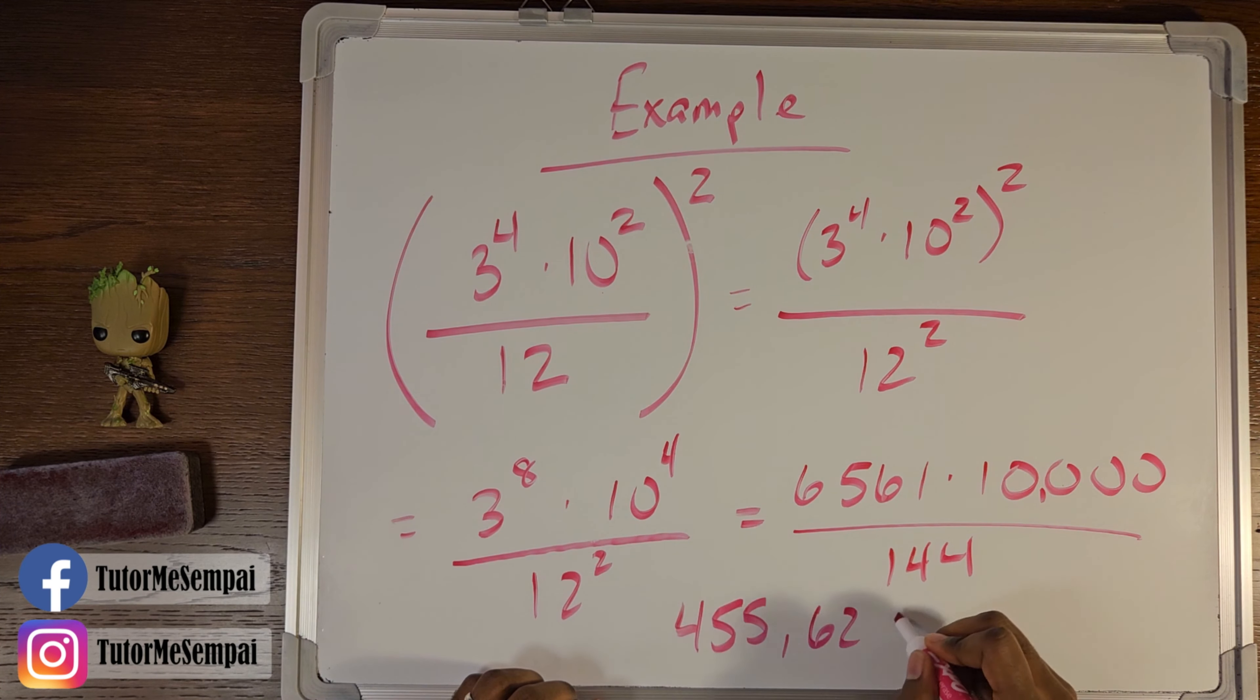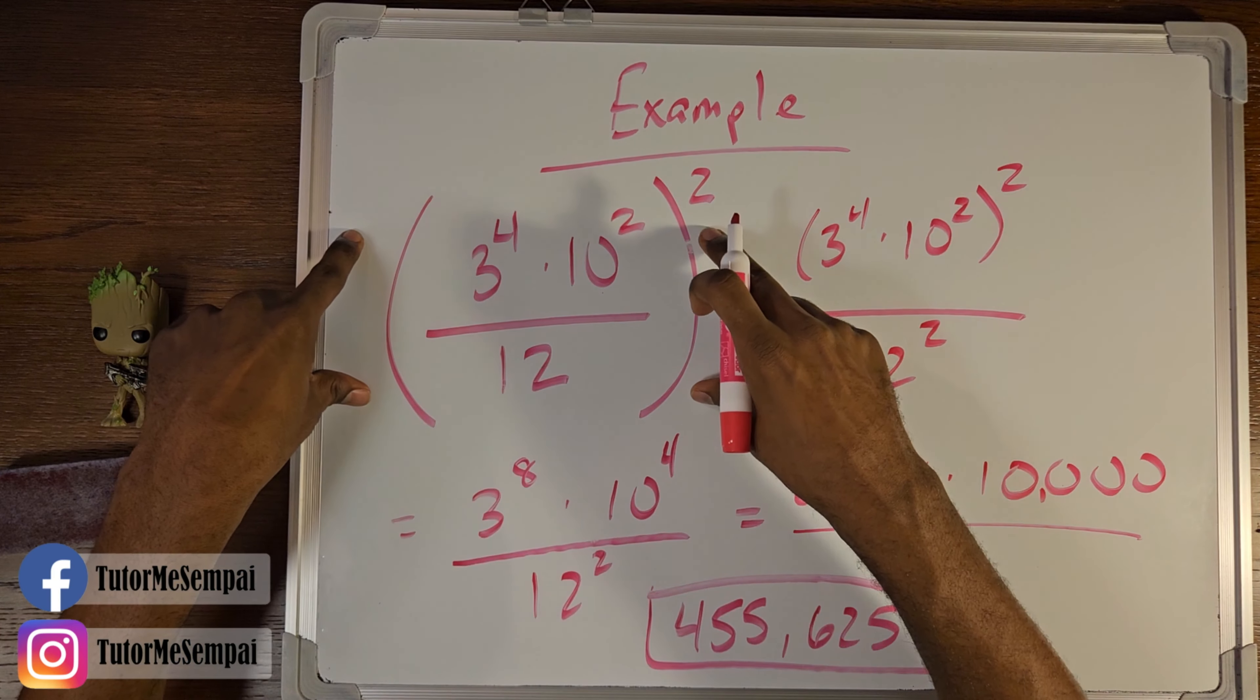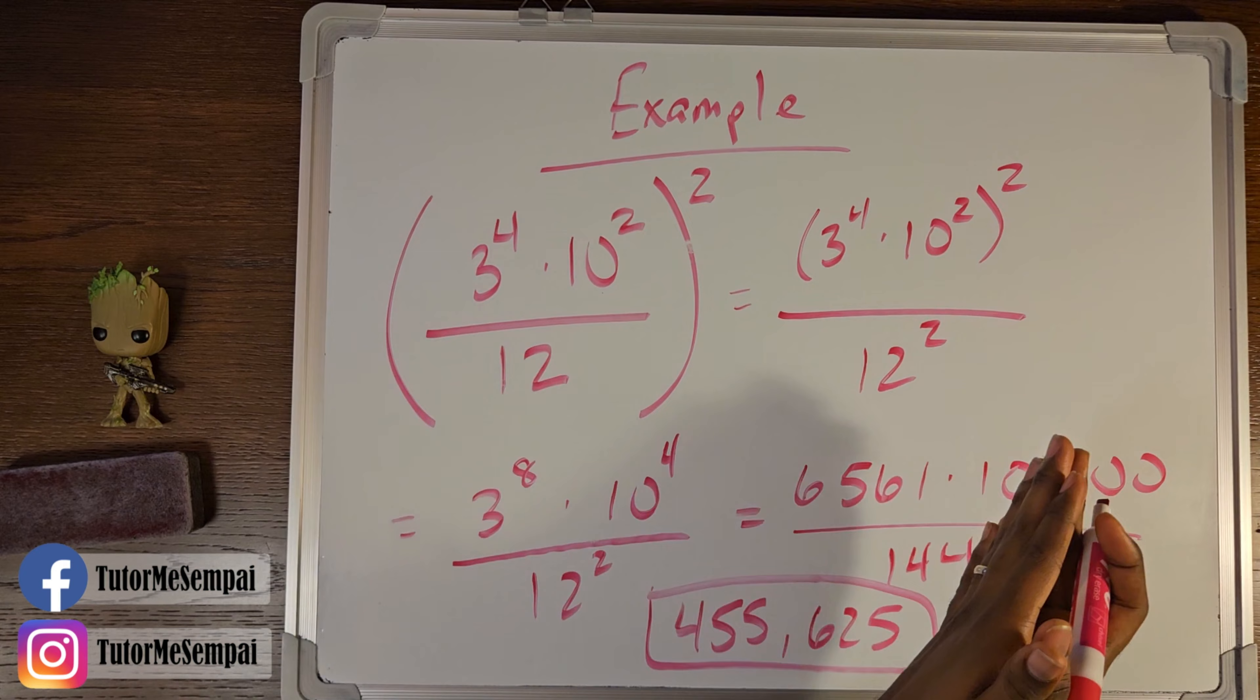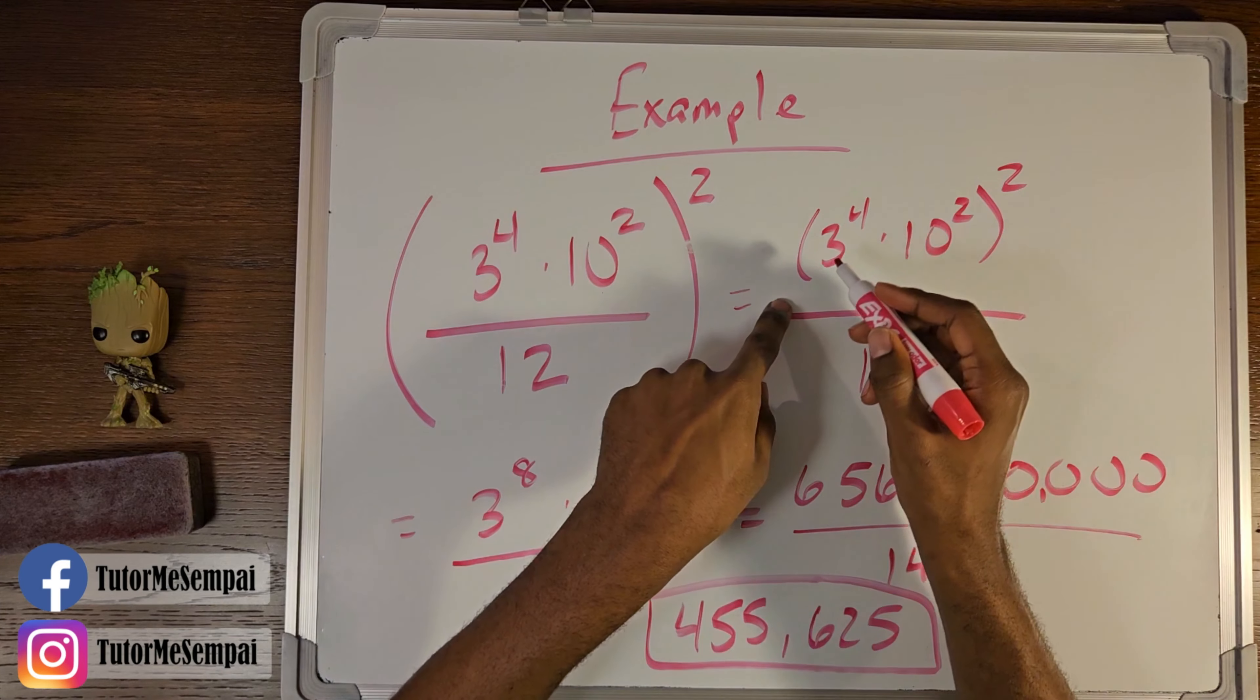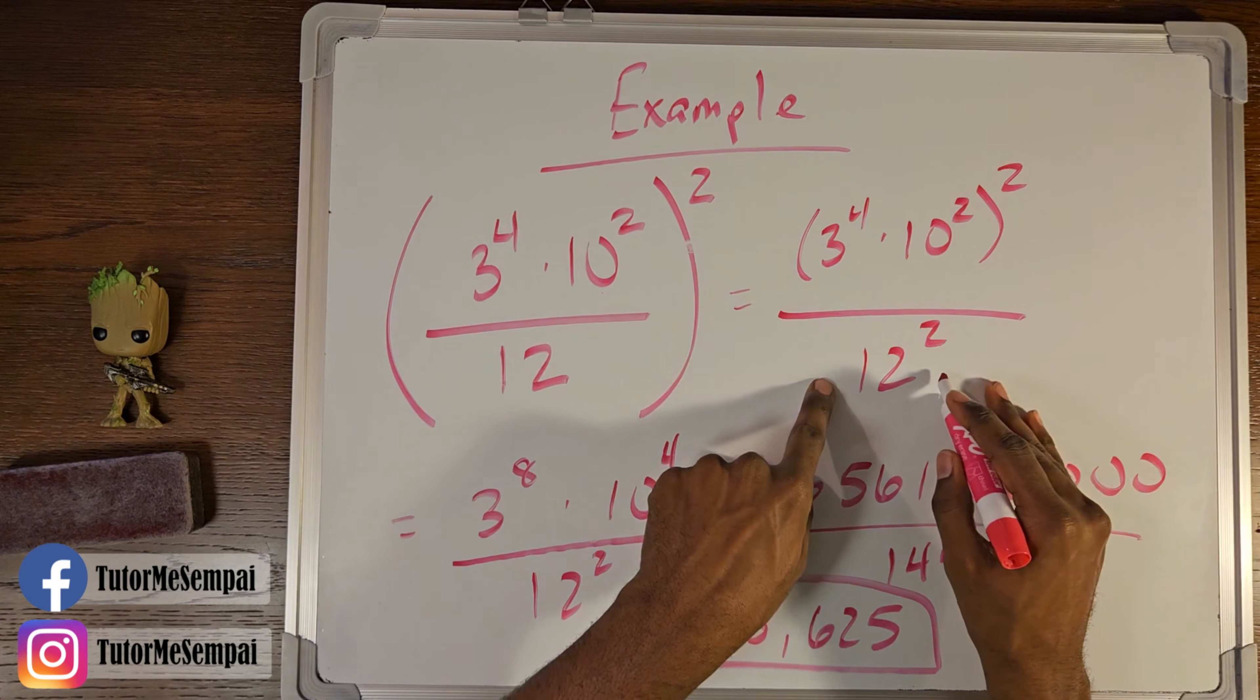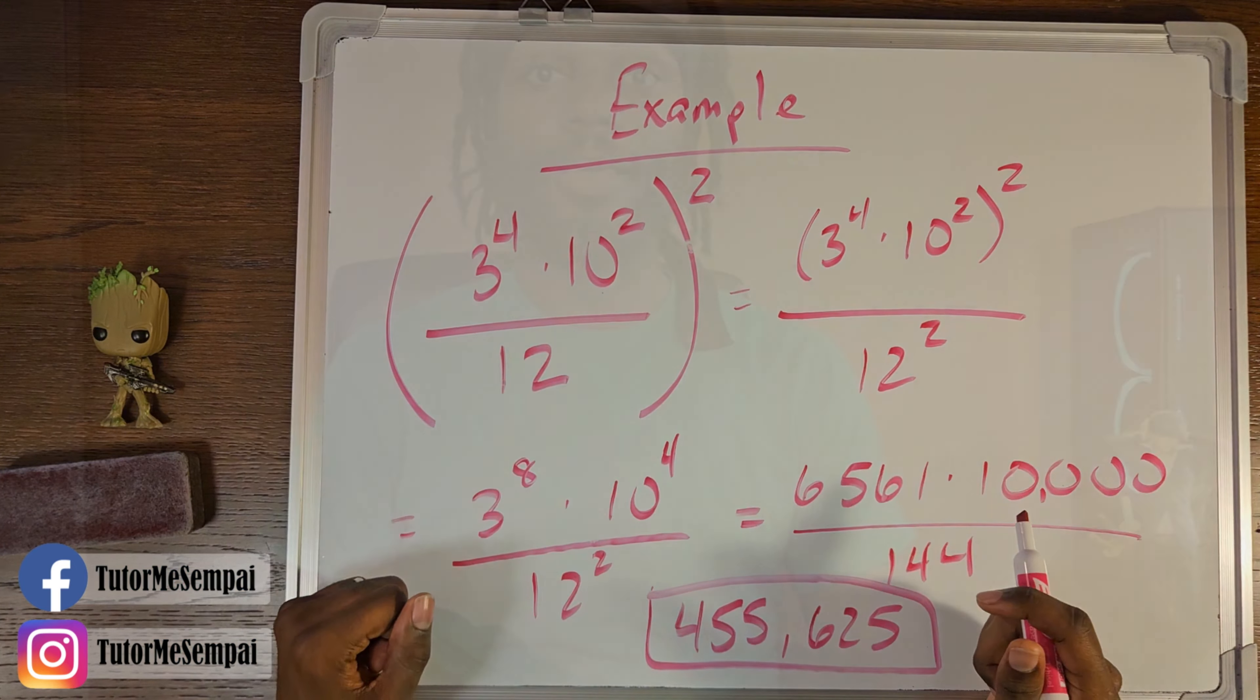Now the answer is important, yes, but the work is what we want to focus on—how we got from here to here. At its core, raising your fraction to an exponent is just going to be taking that numerator, no matter what it is—it can be a single number or something like this—and raising it to that same exponent, as well as your denominator and raising it to that same exponent. The rest is just math that you know. So I hope you followed today's examples and I hope you now know how you can do your powers of fractions.